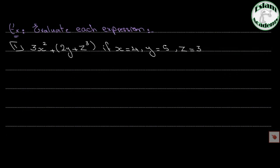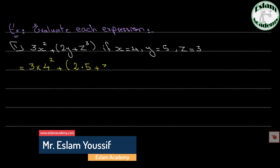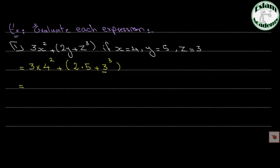Now evaluate expressions by substituting given variable values, then applying the order of operations. Problem 1: 3x squared plus (2y plus z) to the power 3, where x equals 4, y equals 5, z equals 3. By substitution: 3 times 4 to the power 2, plus (2 times 5 plus 27). Solve inside the bracket first — power takes priority — giving 3 times 16 plus 10 plus 27.